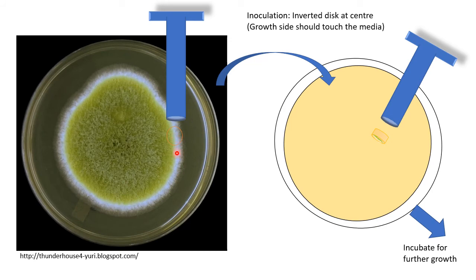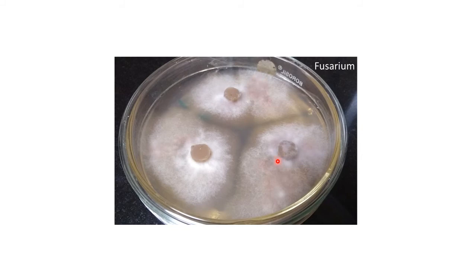What if you have a fully grown fungal culture and need to subculture from it? From the periphery or margin of your colony, you can use the cork borer to get a disc and inoculate it further. The method is the same — the only difference is the colony is fully grown here. This plate is for Fusarium solani, which I worked with. To subculture Fusarium, I added three discs to a single plate.